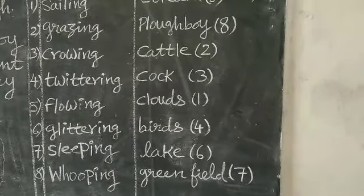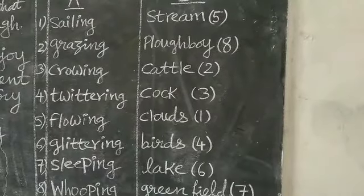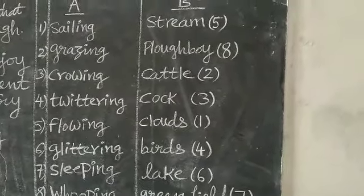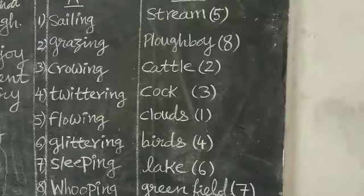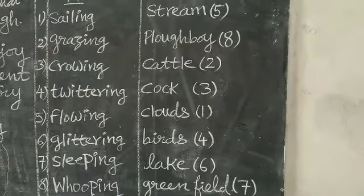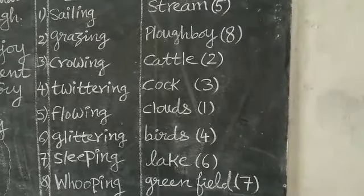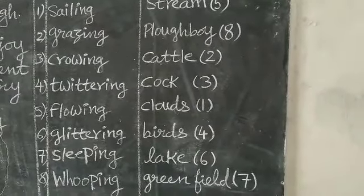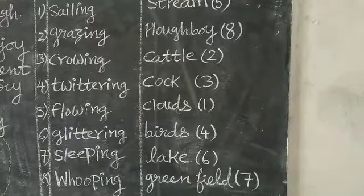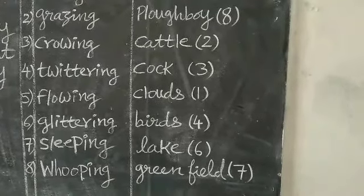The fifth one is 'flowing.' In the poem, the poet describes a flowing stream, so flowing means water. The answer for the fifth one is 'stream' — I have put number 5. The sixth one is 'glittering,' which means shining. The answer is 'lake.' The lake is shining because the sun's rays are falling on the lake water — that is why the lake looks glittering and shining with a flash of light. I have put number 6 next to lake.